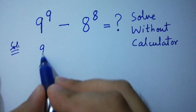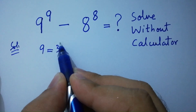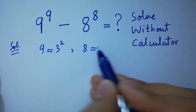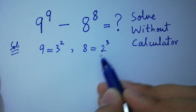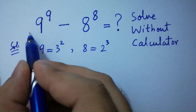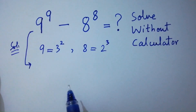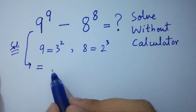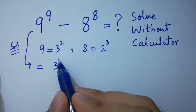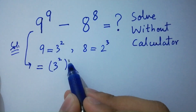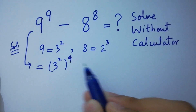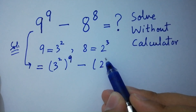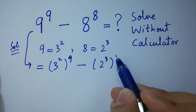Since 9 equals 3 squared (3 times 3 is 9), and 8 equals 2 cubed (2 times 2 is 4, 4 times 2 is 8), the expression becomes (3²)^9 minus (2³)^8.